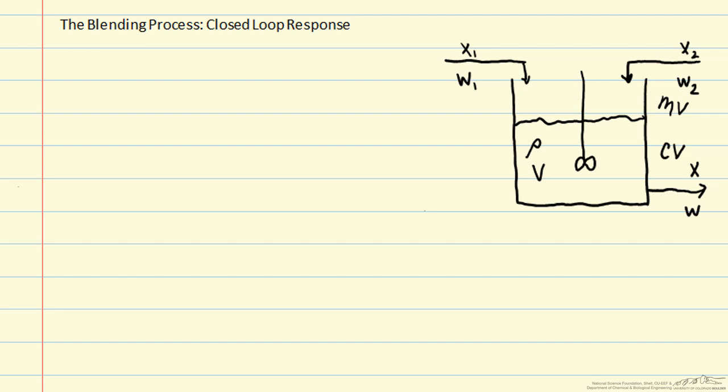In this screencast, we will consider how a closed loop system responds to a change in set point. We will consider the blending process as the example.